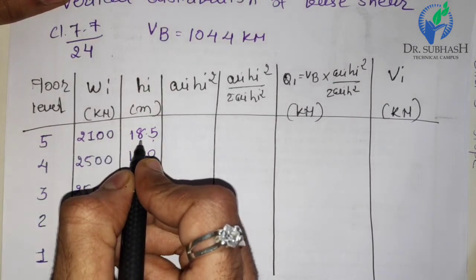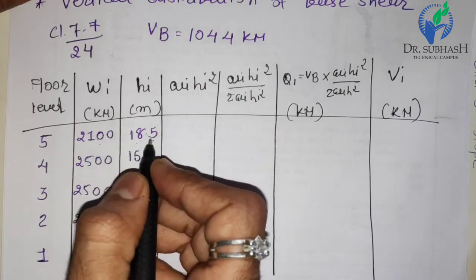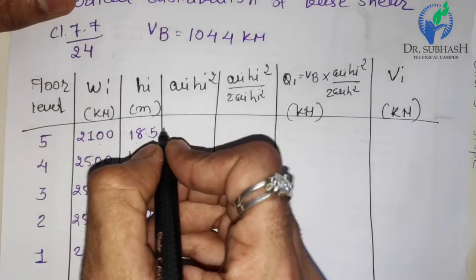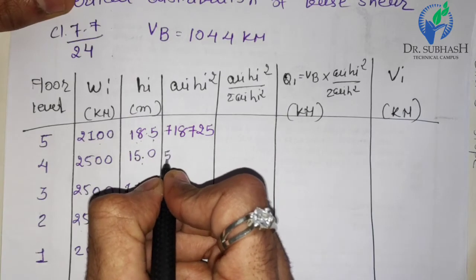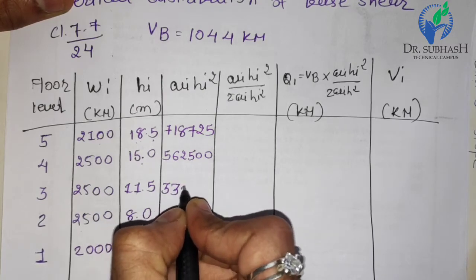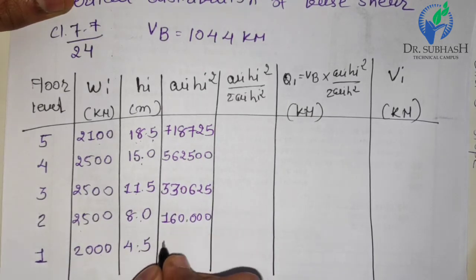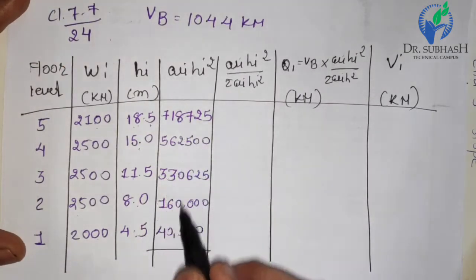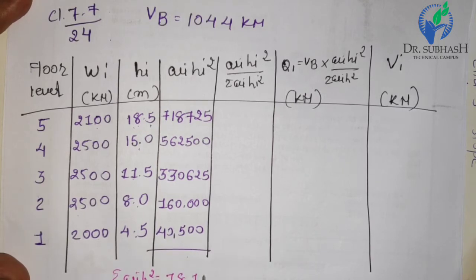Now multiply WI × HI² for each story. Story 5: 2100 × 18.5² = 718,725. Story 4: 2500 × 15² = 562,500. Story 3: 2500 × 11.5² = 330,625. Story 2: 2500 × 8² = 160,000. Story 1: 2000 × 4.5² = 40,500. Summation of WI·HI² = 1,812,350.